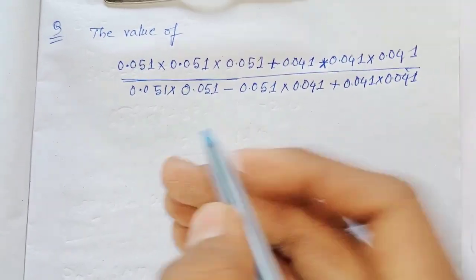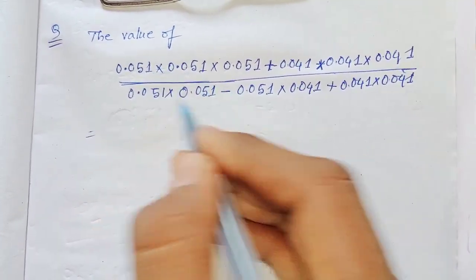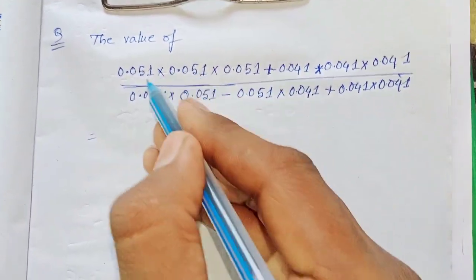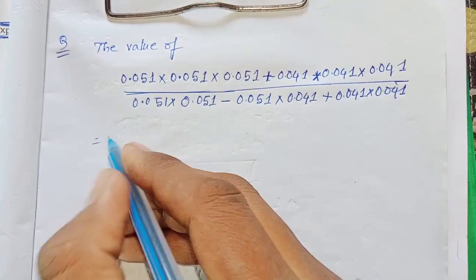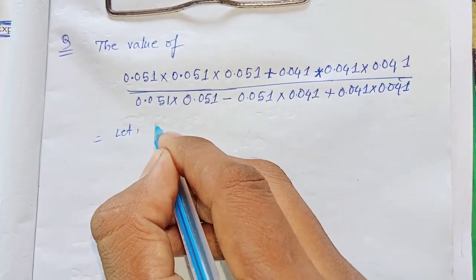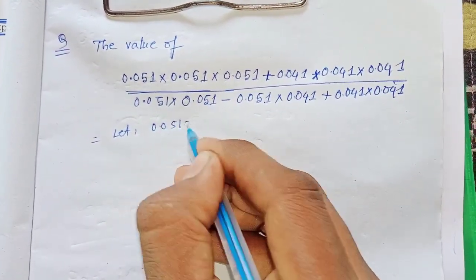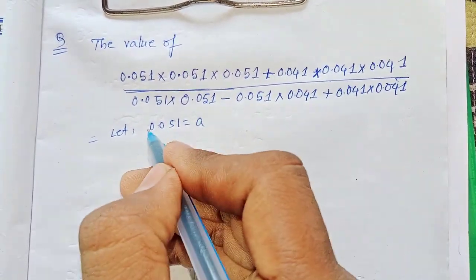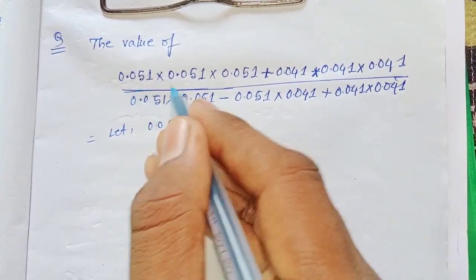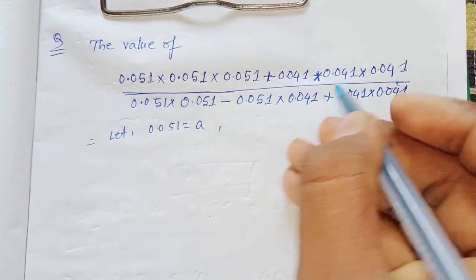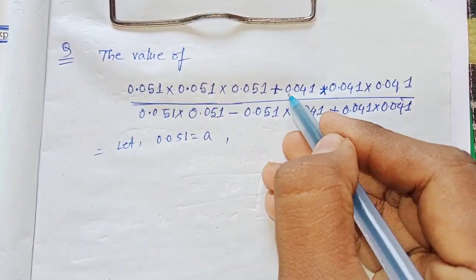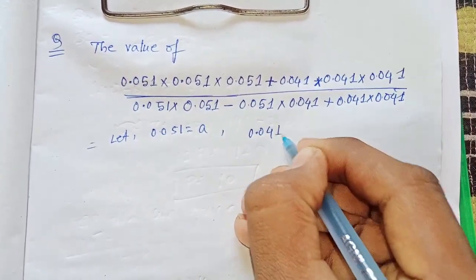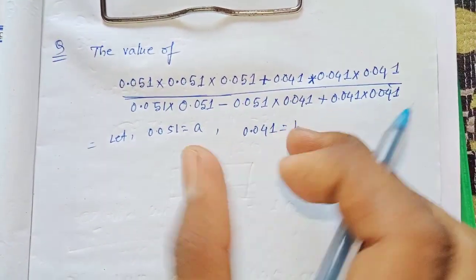Let's see — we will solve this expression in a very simple way. We take 0.051 equals to a, and another value 0.041 equals to b.